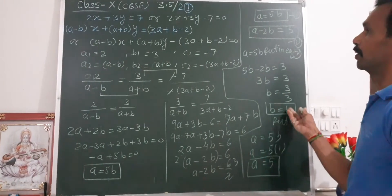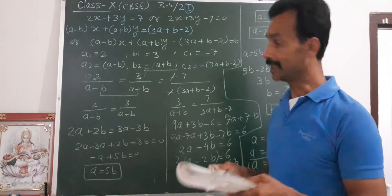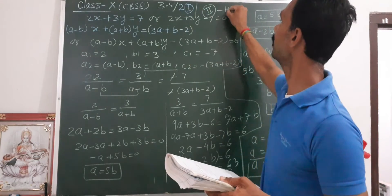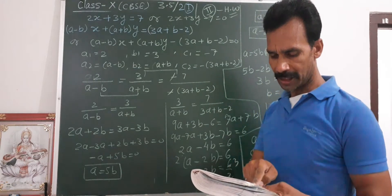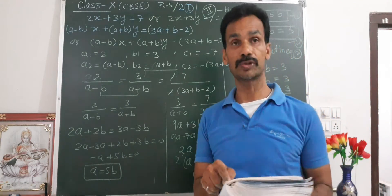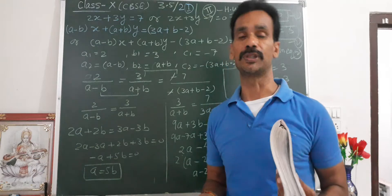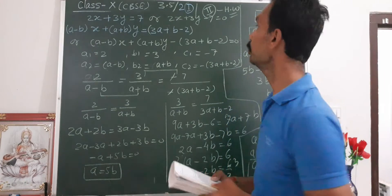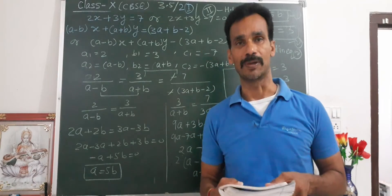So A equals 5 and B equals 1. Now the second part of question 2 is your homework — same topic but with a different condition: find the value of K for which the following pair of linear equations has no solution. No solution means A1 upon A2 equals B1 upon B2, not equal to C1 upon C2. We will solve it similarly. Question number 2, first part is over. Bye, thank you.